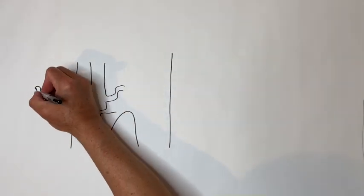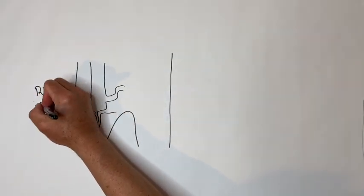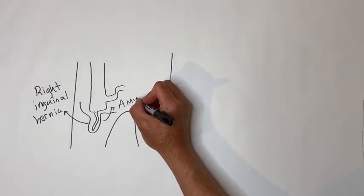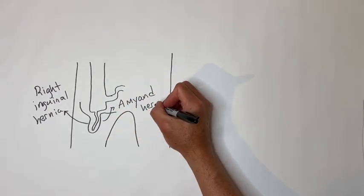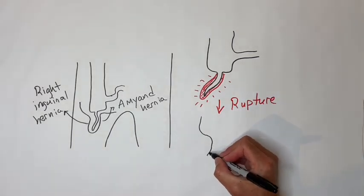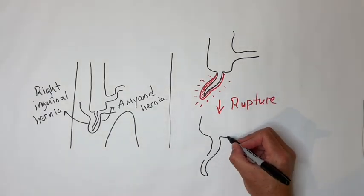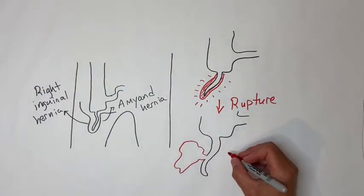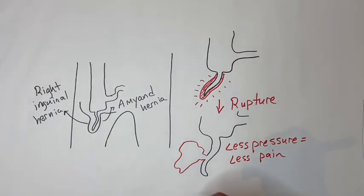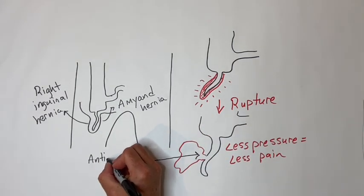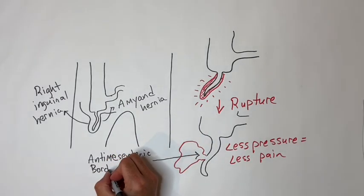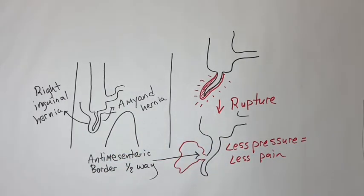A ruptured appendix in a right inguinal hernia is called an Amyand hernia. If an appendix is causing pain and then ruptures, the patient can actually feel better for a short while then gradually get sick again. The most common location for rupture is the antimesenteric appendix about halfway down, as the blood supply is the worst there.